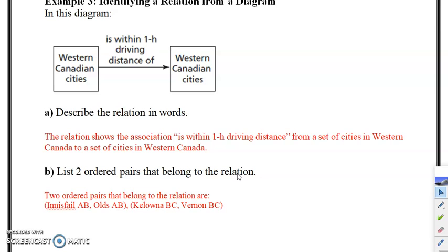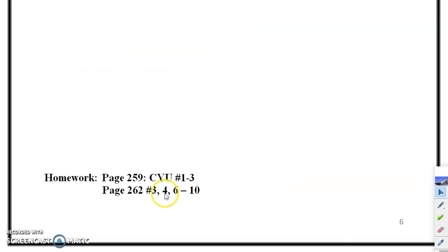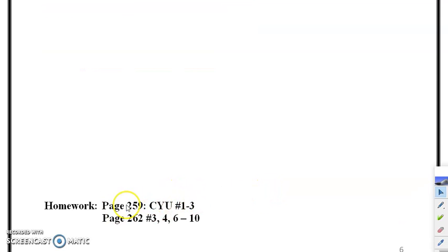We'll be doing the next section, we'll look at 5.2 and that's called properties of functions. With this 5.1 there are three check your understanding questions that you can do on page 259 to 261, and then there are some example exercises on page 262, number 3, 4, 6 through 10.